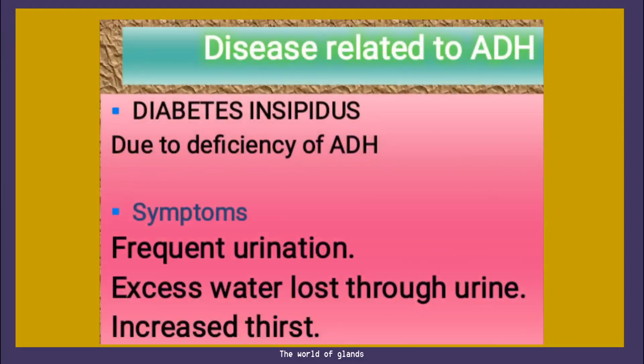Let's see a disease related to vasopressin or ADH — it is known as diabetes insipidus. It is due to the deficiency of vasopressin or ADH. The symptoms include frequent urination, excess water loss through urine, and increased thirst. There are two types of diabetes: diabetes mellitus, which is related to insulin deficiency, and diabetes insipidus, which is related to ADH deficiency. Excess water is lost through urine — that is the main symptom — leading to frequent urination and increased thirst.